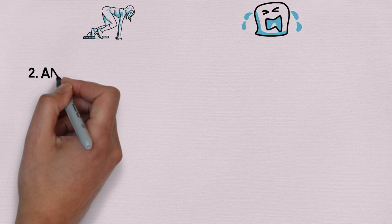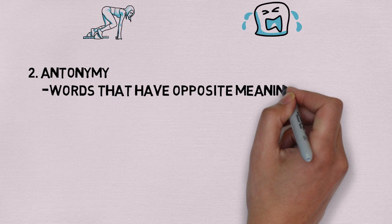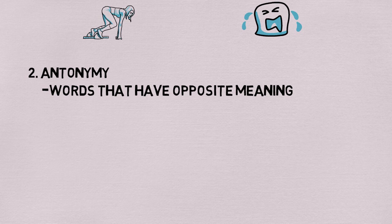The second relation we'll be looking at is antonymy. Antonymy is the opposite of synonymy — it is when two words have opposite meanings. Words like 'run' versus 'walk,' 'cry' versus 'laugh,' 'sleep' versus 'wake,' or 'yes' versus 'no.'